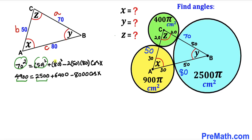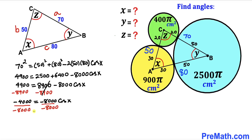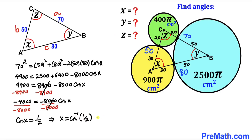Expanding: 4900 = 2500 + 6400 − 8000·cos(X). Combining 2500 + 6400 gives 8900, so 4900 = 8900 − 8000·cos(X). Subtracting 8900 from both sides: −4000 = −8000·cos(X). Dividing both sides by −8000: cos(X) = 1/2. Therefore angle X = 60°.